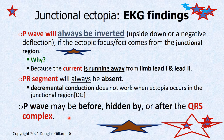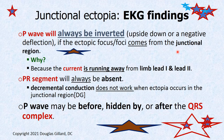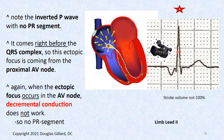The P wave with junctional ectopia may not even be visible — maybe it's hidden behind the powerful QRS complex, or maybe it's way after the QRS. So the P wave can be in different places on the tracing. If you have a junctional ectopic focus going, current would be running away from limb lead 1 or 2.